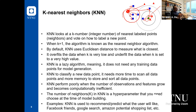KNN is a very simple but lazy algorithm — it doesn't need any training data for model generation. We don't build a model; we just decide K and calculate the Euclidean distance between the new point and all data points, sort them in descending order, and calculate votes for each class. Computationally it's inefficient because each time we need to calculate Euclidean distances. In two-dimensional space it's easy, but in multidimensional higher-dimensional space it's more complex — complexity increases with number of dimensions and classes.